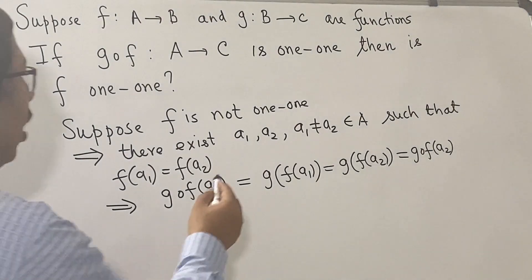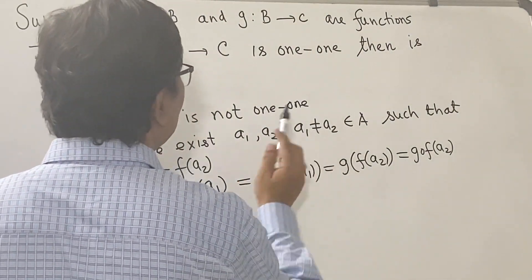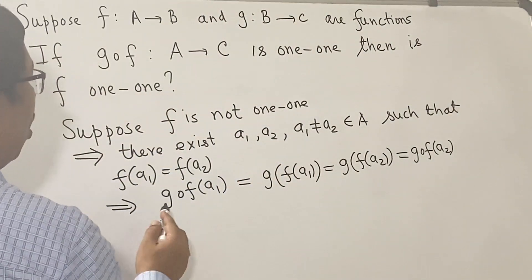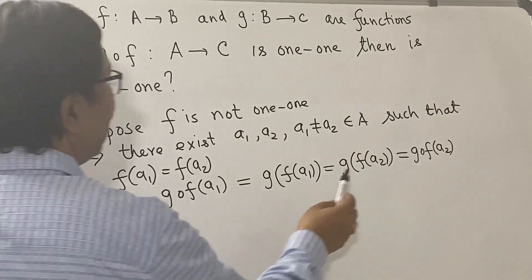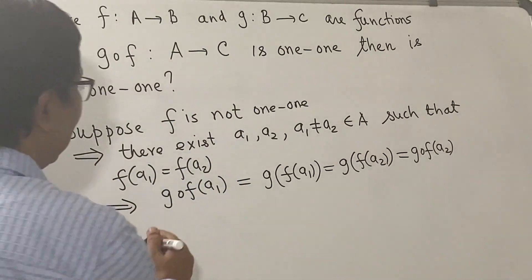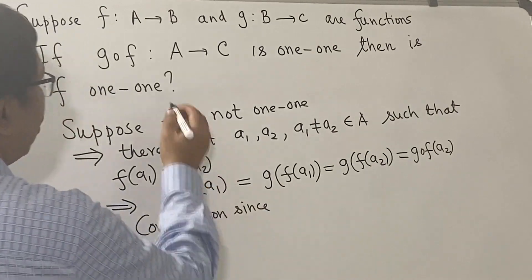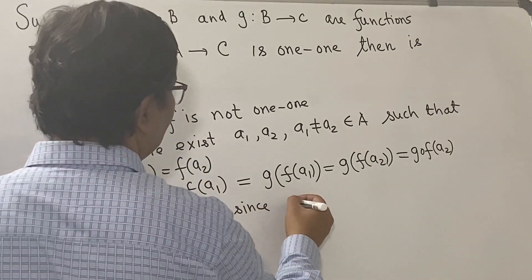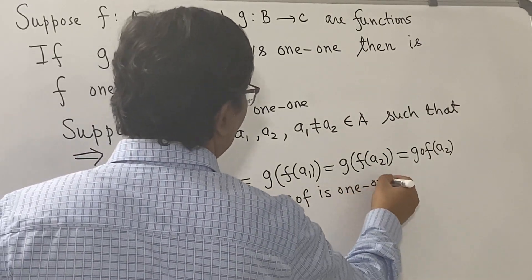So we have found two points a₁, a₂ where a₁ ≠ a₂ but g∘f(a₁) = g∘f(a₂). This is the contradiction since we have assumed that g∘f is one-to-one.